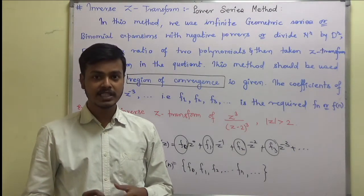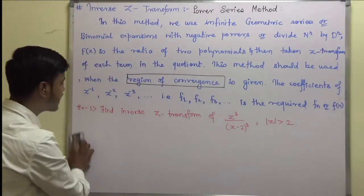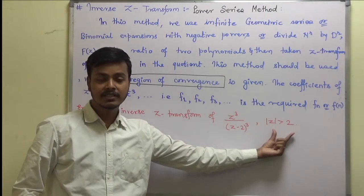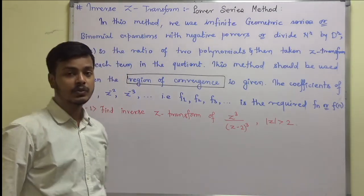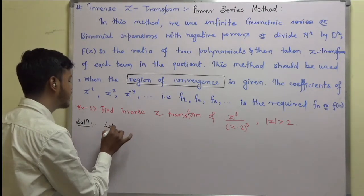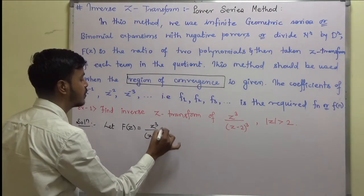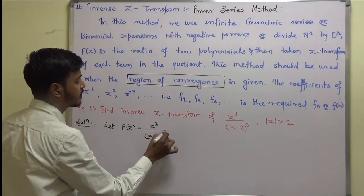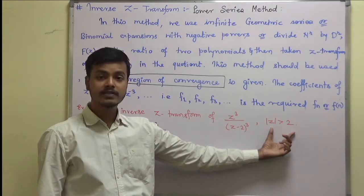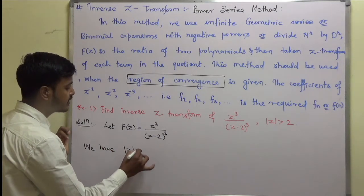Without wasting time, let us take the very first example. Example 1: find the inverse Z transform of z³ upon (z−2)³, and the region is given as |z| greater than 2. So my f(z) is equal to z³ upon (z−2)³. We are given that the region of convergence is |z| greater than 2, which means |2/z| is less than 1.